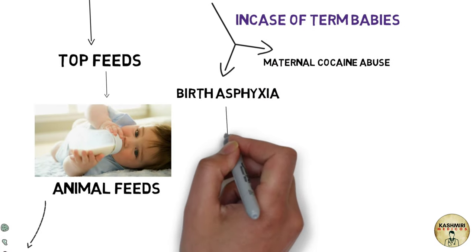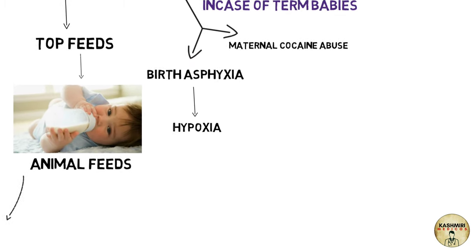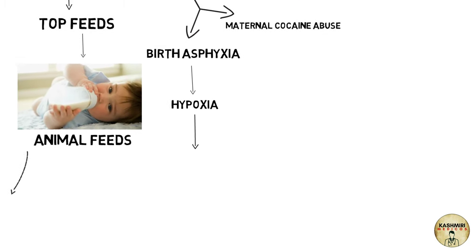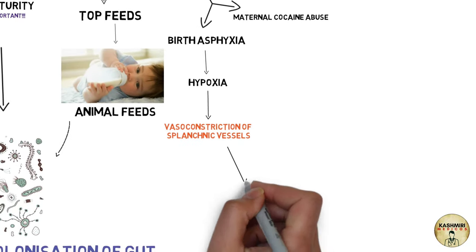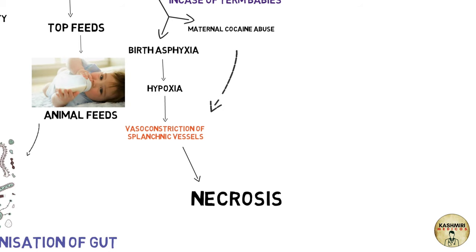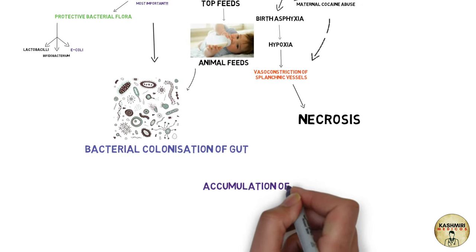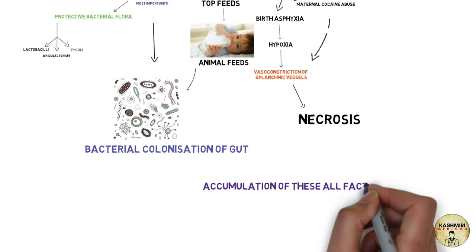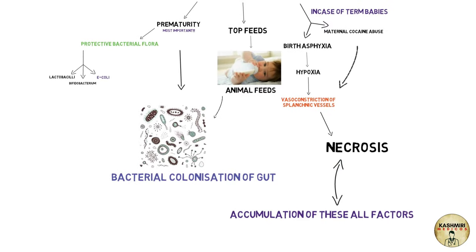Birth asphyxia in term babies leads to hypoxia, and hypoxia leads to vasoconstriction of splanchnic vessels that results in necrosis. In case of maternal cocaine abuse, you also have vasoconstriction of splanchnic vessels leading again to necrosis. So the accumulation of all of this is basically leading to inflammation of the intestines resulting in necrosis.